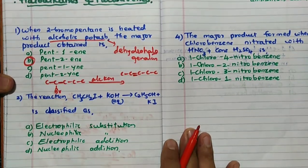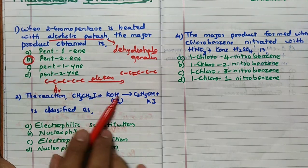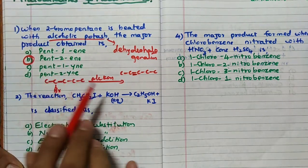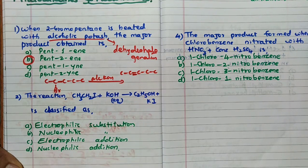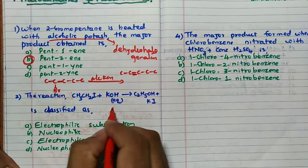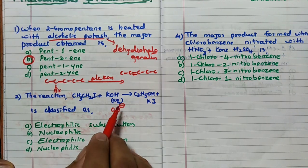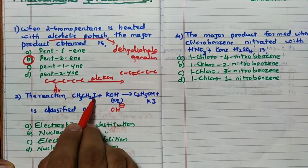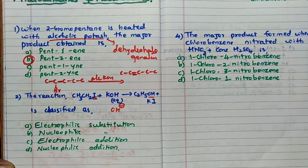Second reaction: CS₂ with aqueous KOH — note it is not alcoholic KOH. Aqueous KOH gives C₂H₄OH plus KI. Here OH⁻ acts as a nucleophile and substitutes the iodine to form an OH group. Hence this reaction is classified as a nucleophilic substitution reaction.